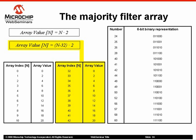The 16 unique index values are selected using the following majority function criteria: an array index number is a unique value when its binary representation contains a majority of ones in the three most significant bits, followed by a majority of zeros in the three least significant bits.